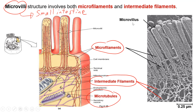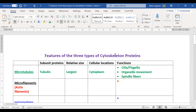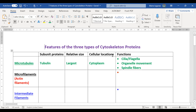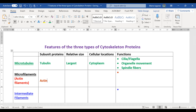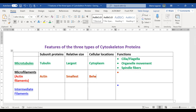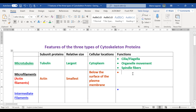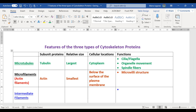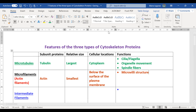Returning to the board notes: microtubules are made of tubulin; microfilaments are made of actin and are the smallest cytoskeletal structures, found below the surface of the plasma membrane. For functions, we'll start with the microvilli structure. This is just a start to help you organize your thoughts around the cytoskeletal structures.